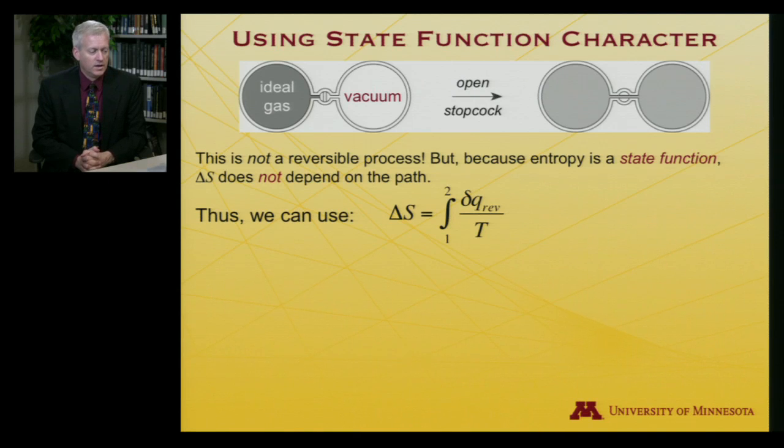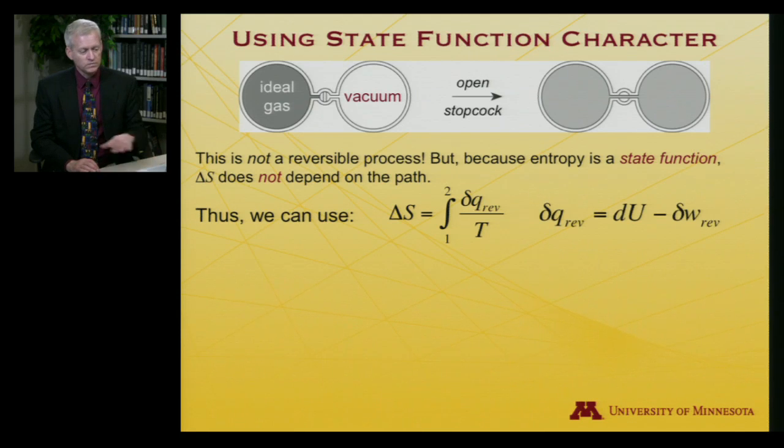That is, if I look at del Q reversible over T as I integrate from state point one to state point two, that will be the entropy change for the irreversible process as well, because it only depends on the state points one and two. So what is the change in heat del Q rev? It's equal to dU minus the change in work, so that's the first law.